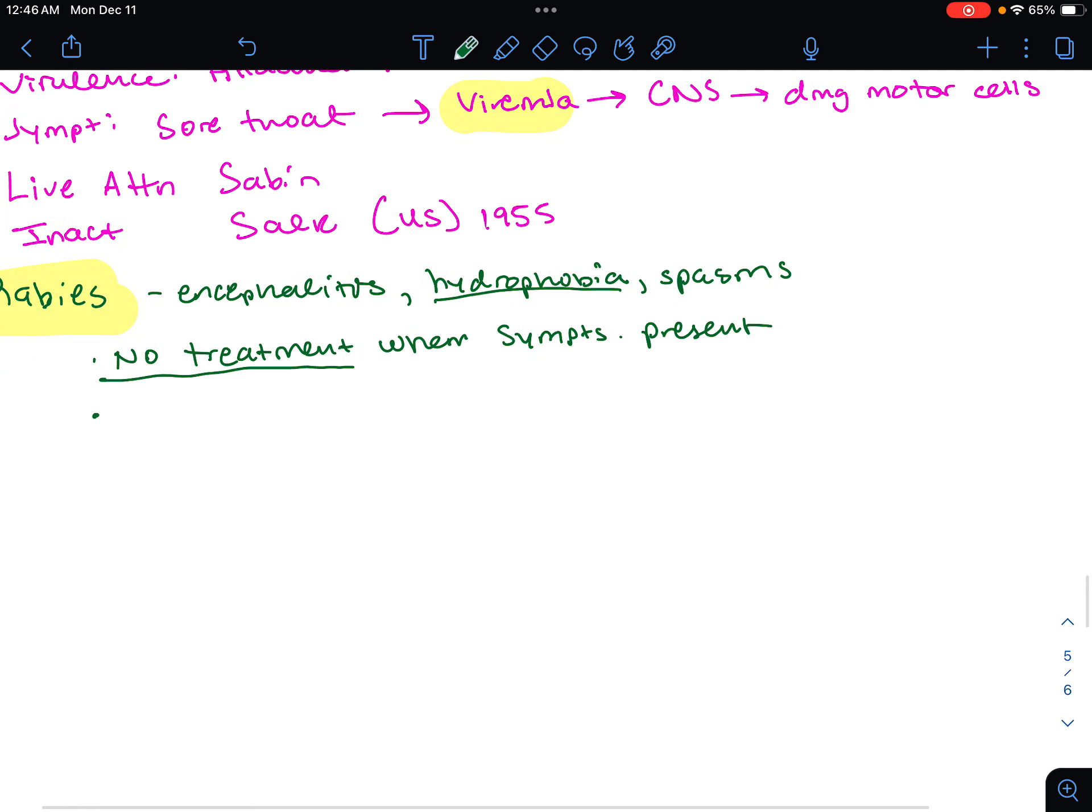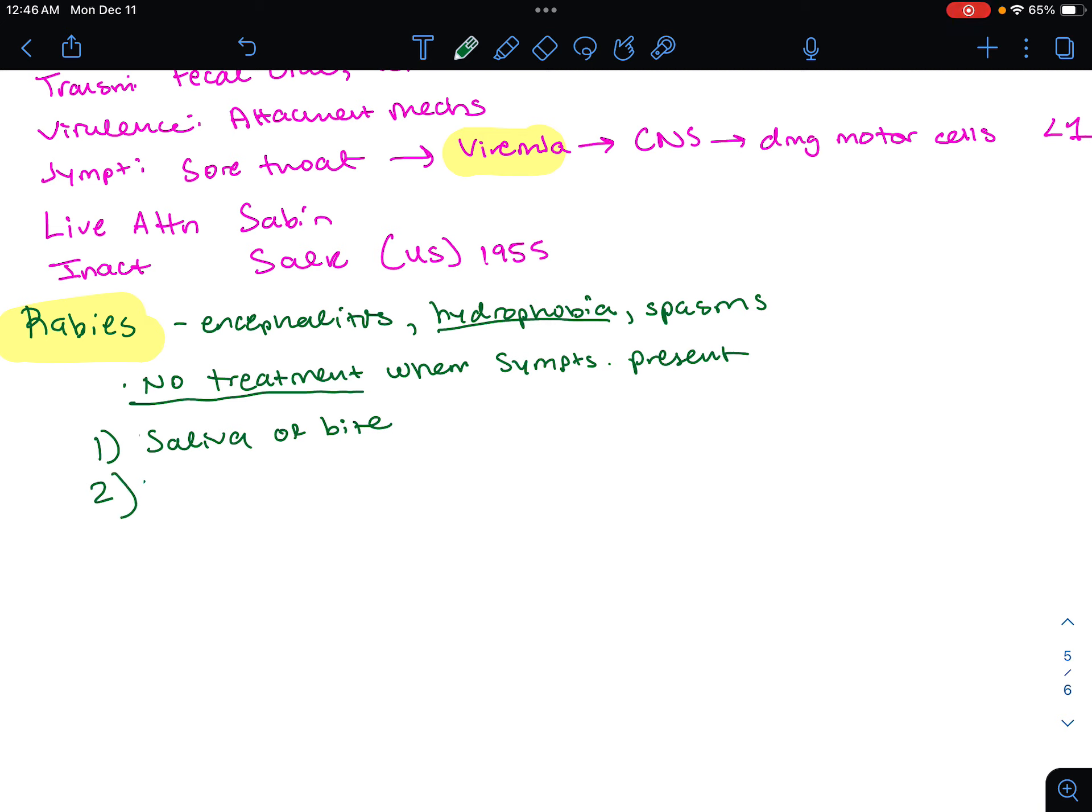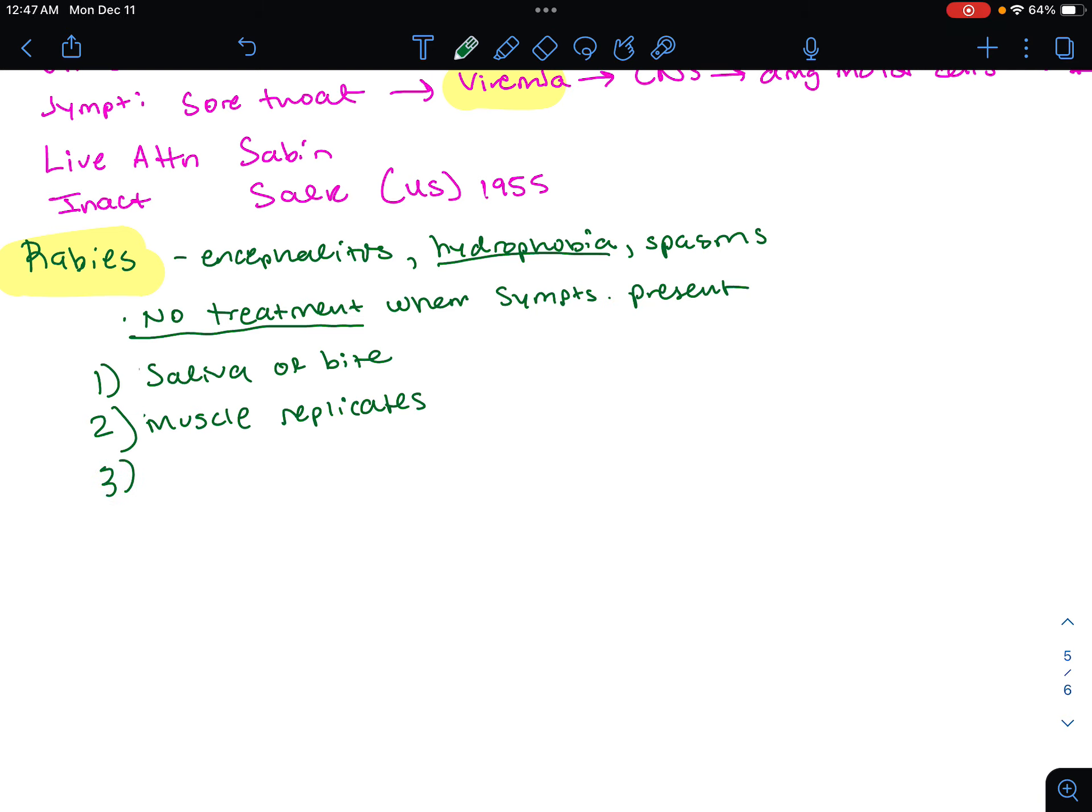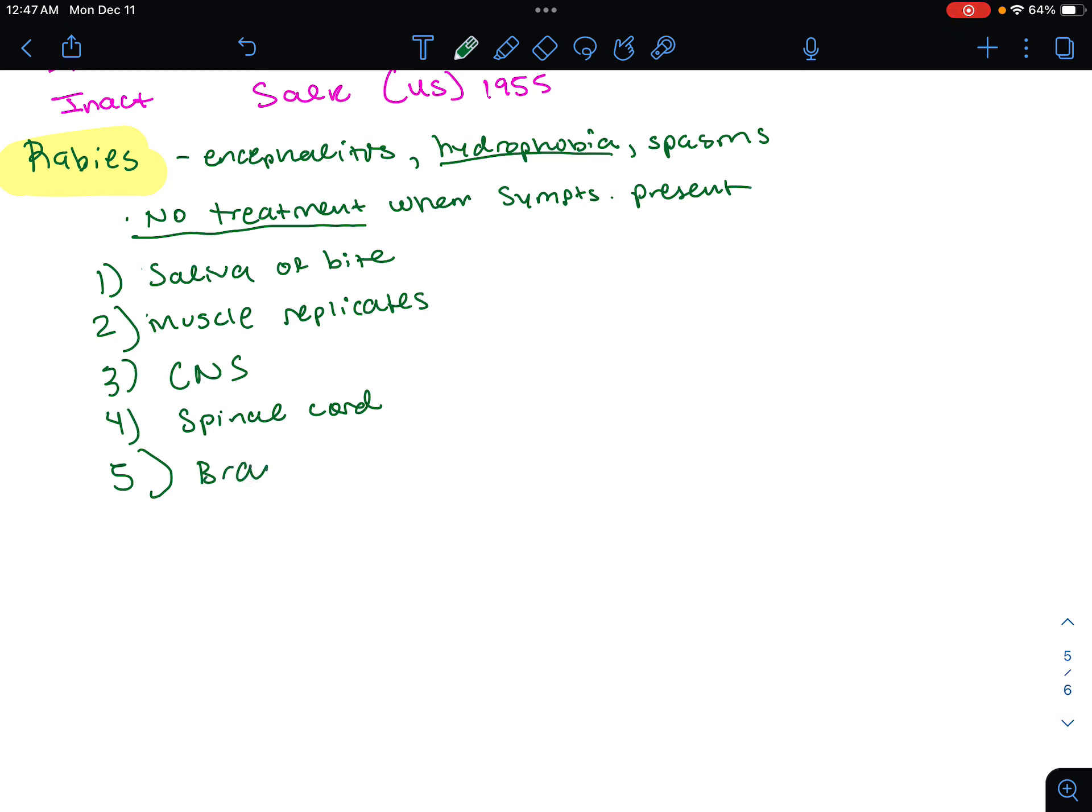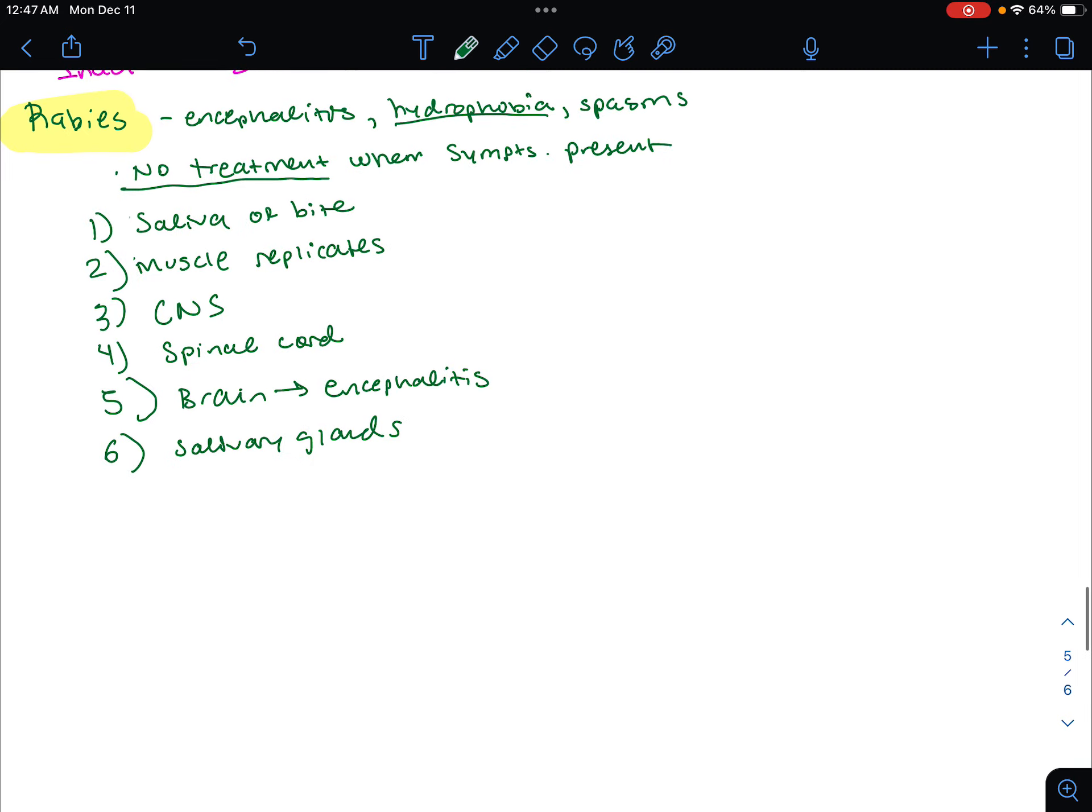First, we're going to get bitten from the saliva from a dog or another animal. Number two, virus replicates in the muscle. Then we're going to move up the system into the central nervous system. Then we're going to go into the spinal cord. The virus is now going to go into the brain to cause that fatal encephalitis. Then the virus will go into the salivary glands and the other organs as well. It's a very nasty thing.